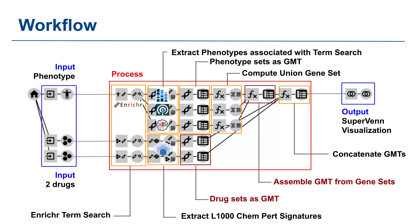First, we start with two drugs and a specific phenotype, which in this case is the adverse event we are interested in. We begin by conducting a term search on Enrichr using the drugs and the adverse event phenotype. This search helps us identify related terms for each input. Next, we look into databases like MGI Mammalian, HPO, and GWAS to extract phenotypes related to our adverse event, and we convert each set of phenotypes into GMT format.